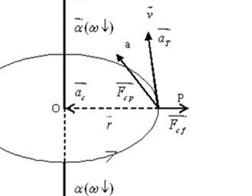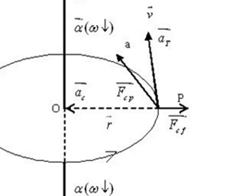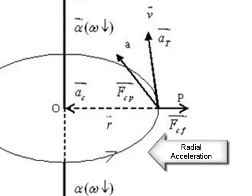When the body is in UCM or non-UCM, one acceleration always acts on the body, which is known as centripetal acceleration. It is always along the radius and always directed towards the center of the path. Its value is V omega, or R omega square, or V square upon R. This acceleration is always directed towards the center and that is why it is known as centripetal acceleration. It is also called radial acceleration because it is always along the radius.